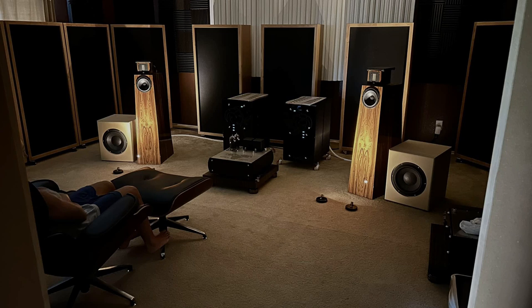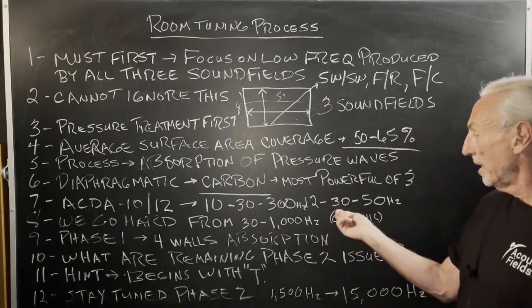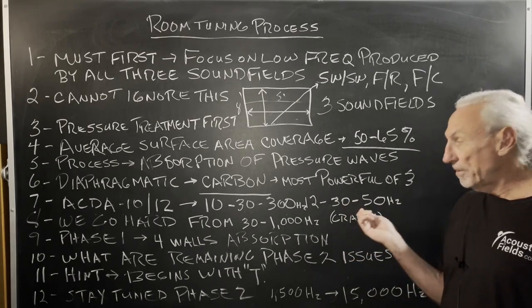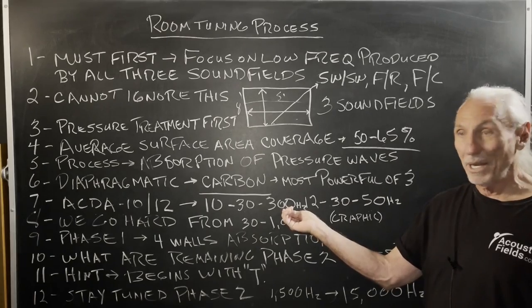Okay, so in this room here, ACDA 12 picture, or I'm sorry, ACDA 12s and 10s were used. The 10s are 30 to 300. The 12s are 30 to 50. All small rooms—we measured over 300 during our research and development period—all small rooms need help from 30 to 300 and 30 to 50. You need a lot of help from 30 to 50. Not as much help from 30 to 300, but they still need help.